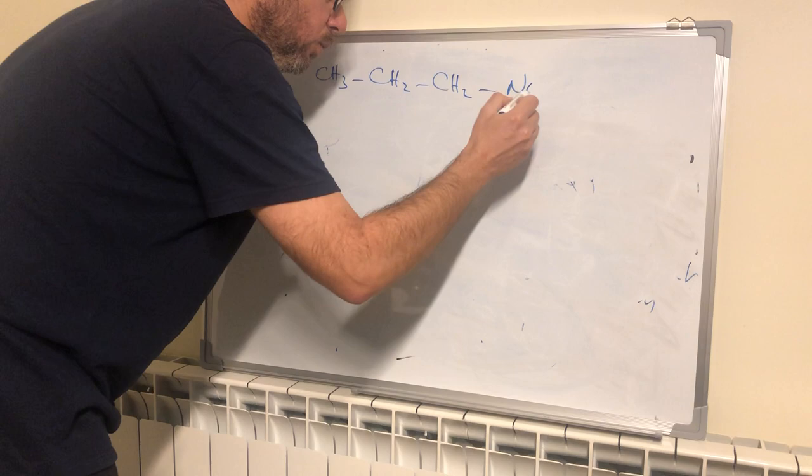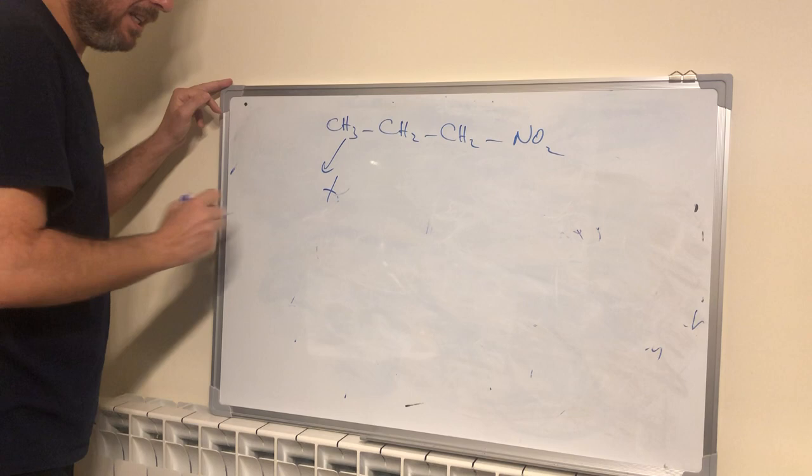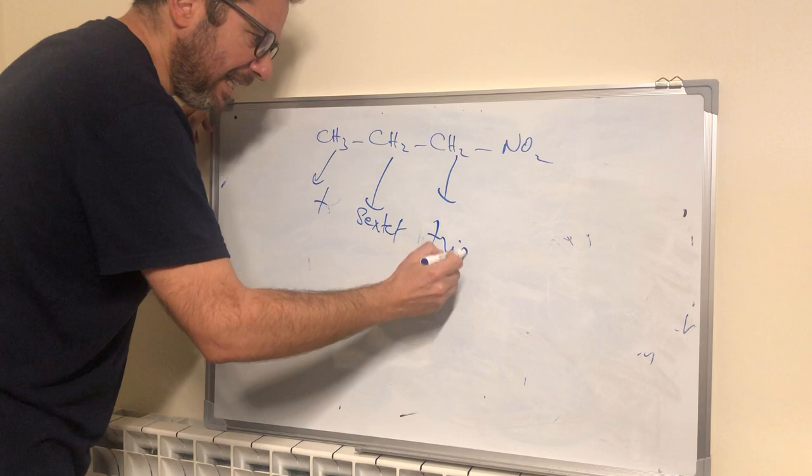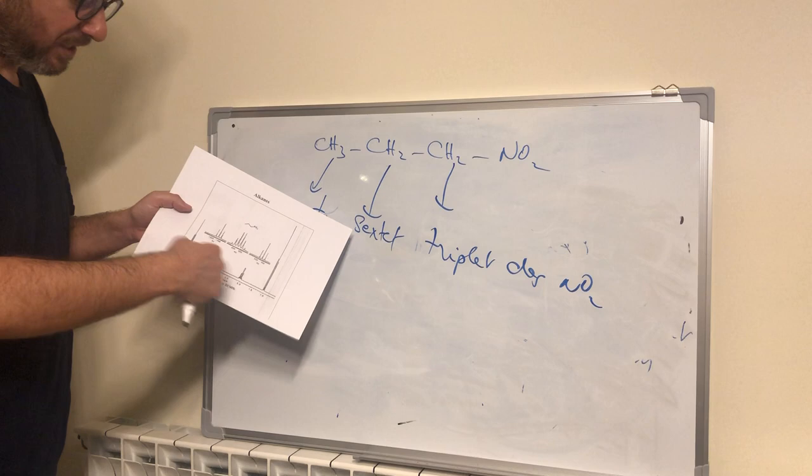If I take the example given to you, CH3, CH2, CH2, NO2. Look here. So this will give a triplet, right? This will give a sextet. This will give a triplet, but this triplet is deshielded by NO2. So as you can see on your spectrum, you have the up for the spectrum is a bigger scale for this one. So this is a triplet. This is a sextet, and this is a triplet.